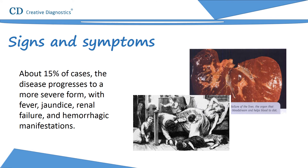However, in about 15% of cases, the disease progresses to a more severe form with fever, jaundice, renal failure, and hemorrhagic manifestations. The vomit may be black with altered blood. When the disease progresses to the severe stage of hepatorenal failure, the mortality rate is 20% or higher, especially among young children and elderly adults. Yellow fever takes its name from the yellow color appearing on the skin and eyes of seriously infected people, a condition called jaundice, which is a sign of liver failure.